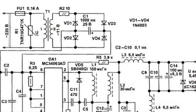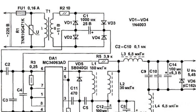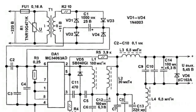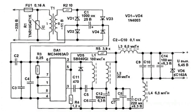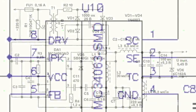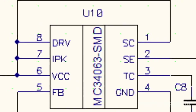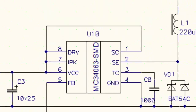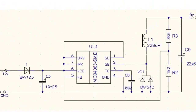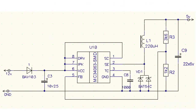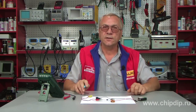In a switching regulator, the current from an unstabilized external source is fed to storing elements in short pulses. A storing element is usually an inductor. Energy is accumulated in the process and is released to the load in the form of electrical power, but with a different voltage. The regulation is achieved through the control of pulses and intervals between them — it has pulse-width modulation.